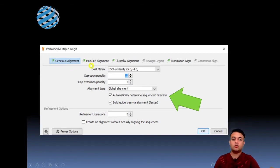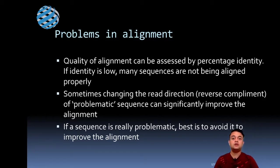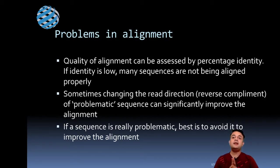Alignment possesses many problems and challenges. The quality of alignment can be assessed by percentage identity — if the identity is very low, many sequences are not being aligned properly, and you need to figure out which are the problematic sequences. Sometimes changing the read direction — reverse complementing a problematic sequence — can significantly improve alignment. If a sequence is really problematic, the best option may be to remove it altogether to improve the overall alignment.